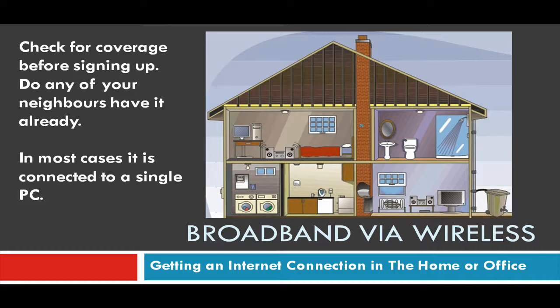In most cases, wireless broadband is connected to a single PC, so if you've got more than one computer you should ask the operator whether their units support multiple computer connections. When you install this service, they'll either send you a small wireless unit or install a wireless pickup point — shown here at the top right of the house — which collects the signal from the operator and is wired through to wherever your computer is located so you can connect to the internet.